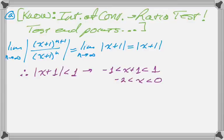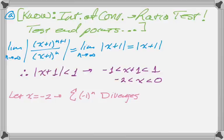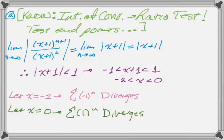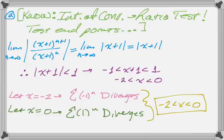And now I need to test my endpoints, so what I'm going to do is I'm going to let x equal negative 2. I'm going to go to the original series, substitute in negative 2, and it simplifies down to this. And that's obviously divergent. It just bounces back and forth between negative 1 and 1. And then when x is 0, I substitute in, I just get 1 to the n, which diverges, the limit is not 0. So I combine this information to say that the interval of convergence is negative 2 to 0.